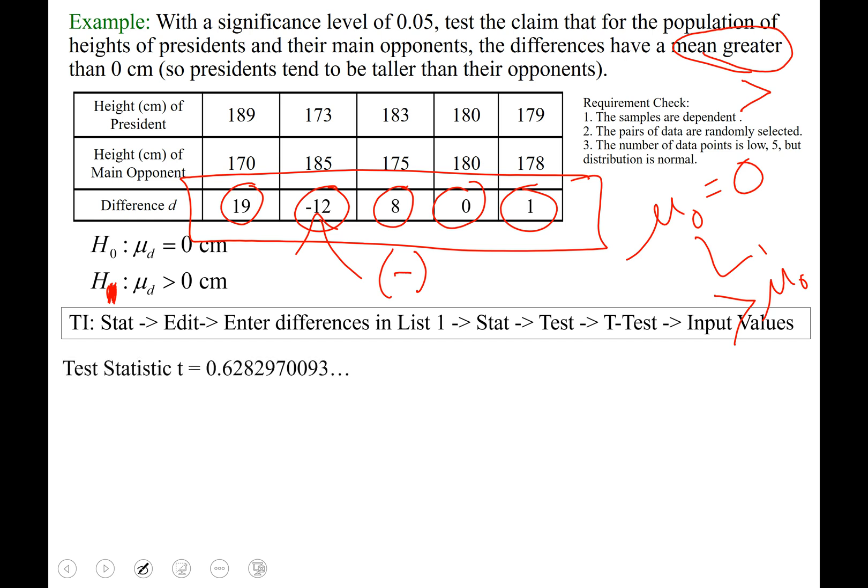And you can see your first output there, t equals is the test statistic, 0.62829 and so on. Second output is your p-value, p equals 0.2819 and so on.